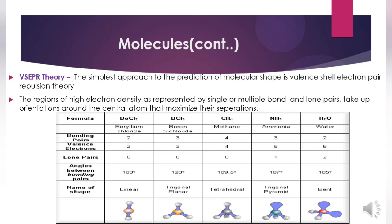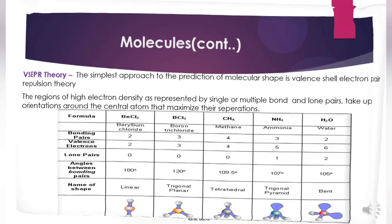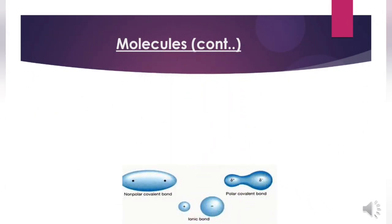Polar bonds: covalent bonds may be polar, corresponding to an unequal sharing of an electron pair, with the result that one atom has a partial positive charge and the other a partial negative charge. The ability of an atom to attract electrons to itself when part of a molecule is measured by electronegativity — the ability of an atom to attract shared electrons in a covalent bond.